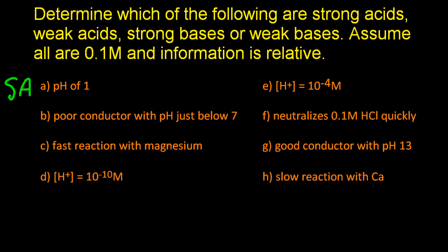Next one, if it's a poor conductor, that means it doesn't have many freely moving charged particles, which means it must be weak. And if the pH is just below 7, it must be an acid. pH below 7 is acidic. Now these are SL explanations. HL have more complicated ones.